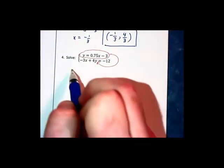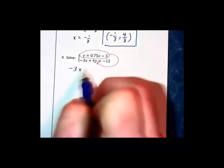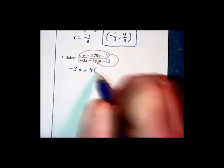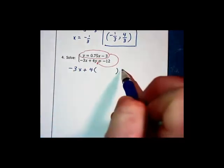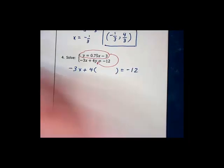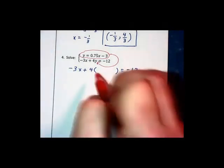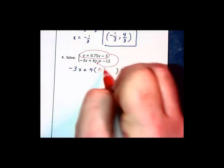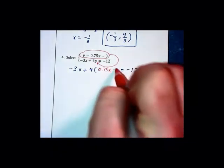Substituting that first equation into the second, our second equation becomes negative 3x plus 4 times what we're substituting in equals negative 12. We're substituting in 0.75x minus 3.